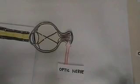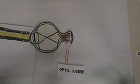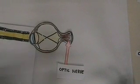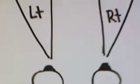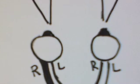The message from the cones and rods then reach the optic nerve, the nerve that carries neural impulses from the eye to the brain. The optic chiasm is the part of the brain where the optic nerves partially cross. The optic chiasm is located at the bottom of the brain, immediately below the hypothalamus.